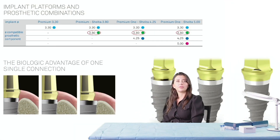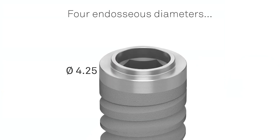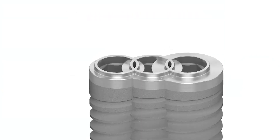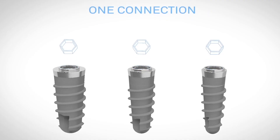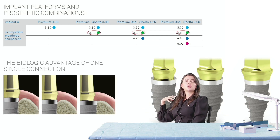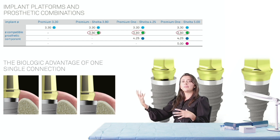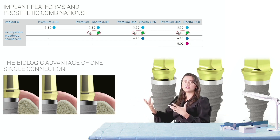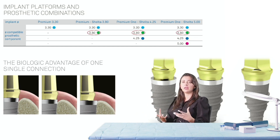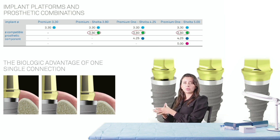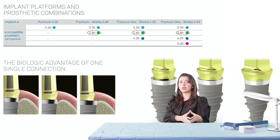The next part we're going to talk about is prosthetics. We have a one-size-fits-all connection for all of our implant systems, whether it's the Premium One system or the Shelter system. The idea behind this is to simplify the prosthetic — so if a surgeon is placing the implant and a general practitioner or restorative dentist is restoring it, there is no miscommunication on sizing. Regardless of what surgical diameter was placed, the prosthetic connection is one size fits all.